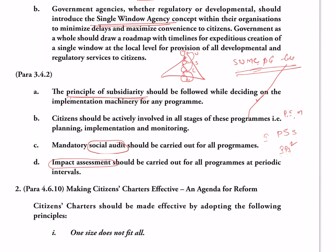Now let us go to citizen charters - how they shall be made effective. What are the problems with citizen charters? Most of the times the charters are prepared without any consultation, there is no proper groundwork done, and no clear standards are mentioned. Indian charters have been criticized as moral documents and managerial charters because they have not been prepared in consultation. A citizen charter is a set of commitments an organization makes to the people about the services it is delivering. How it has to be improved: the first recommendation is one size does not fit all - every department shall have its own unique charters.